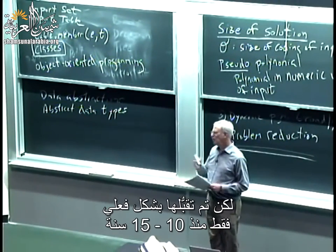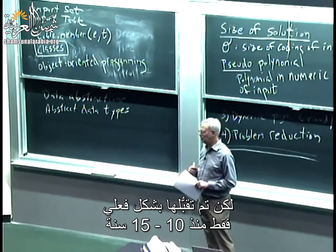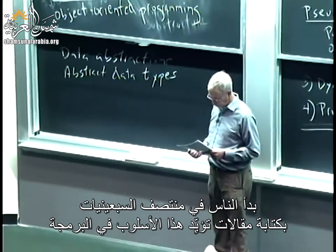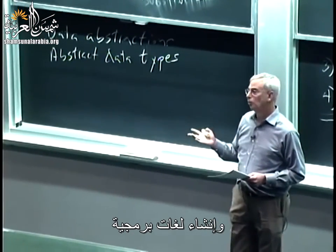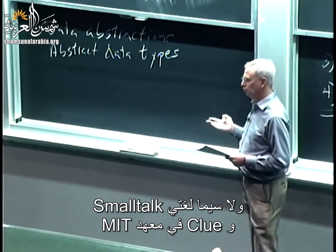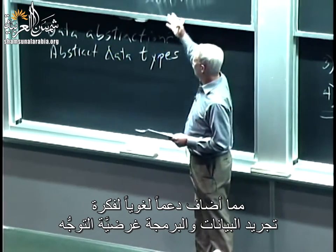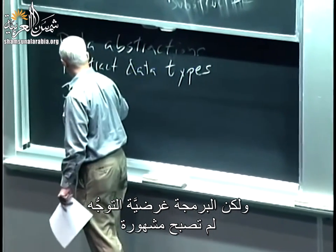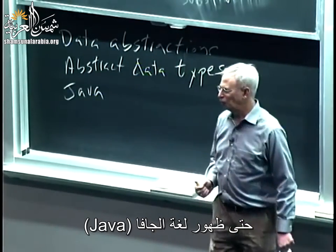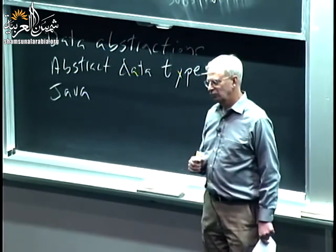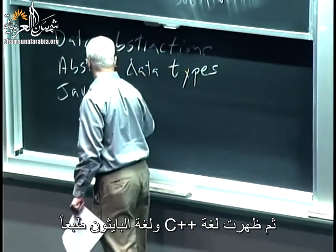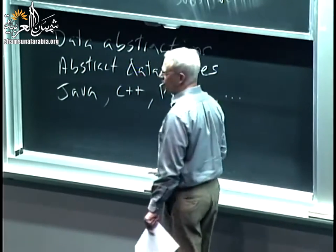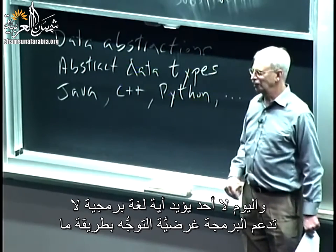In the mid-70s, people began writing articles advocating this style of programming and building languages — notably Smalltalk and Clue at MIT — that provided linguistic support for data abstraction and object-oriented programming. But it really wasn't until the arrival of Java that object-oriented programming caught popular attention. Then Java, C++, Python, of course. Today nobody advocates a programming language that does not support it in some way.